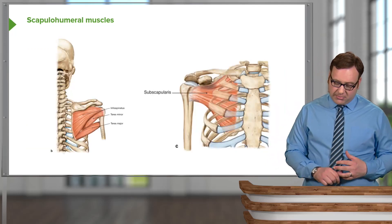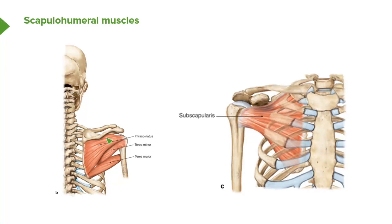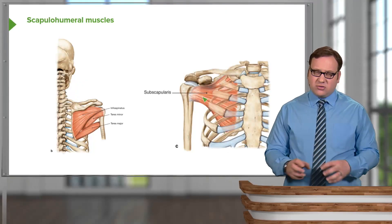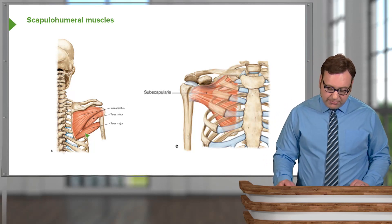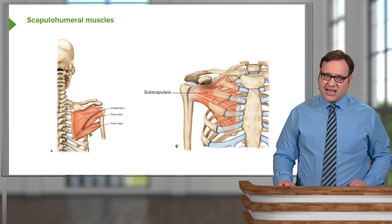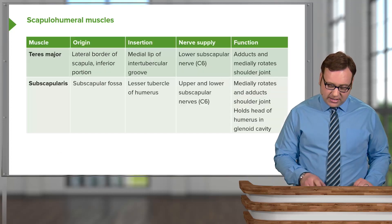These muscles are known as rotator cuff muscles. The four muscles that form the rotator cuff are supraspinatus, infraspinatus, teres minor, and subscapularis. They form a cuff around the head of the humerus. Teres major does not form part of the rotator cuff because it attaches to the shaft of the humerus lower down, rather than around the head.